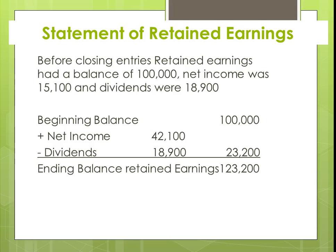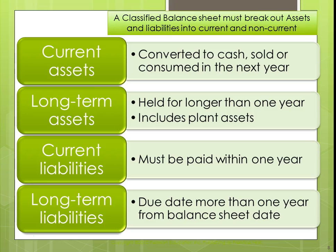A big mistake many students make is when they go to do the balance sheet, they take the beginning balance of $100,000 instead of the ending balance — which is not correct. As part of the balance sheet, we like to do what we call a classified balance sheet. The reason is that we do ratio analysis, and in order to do so, we need to segregate out current assets and current liabilities.